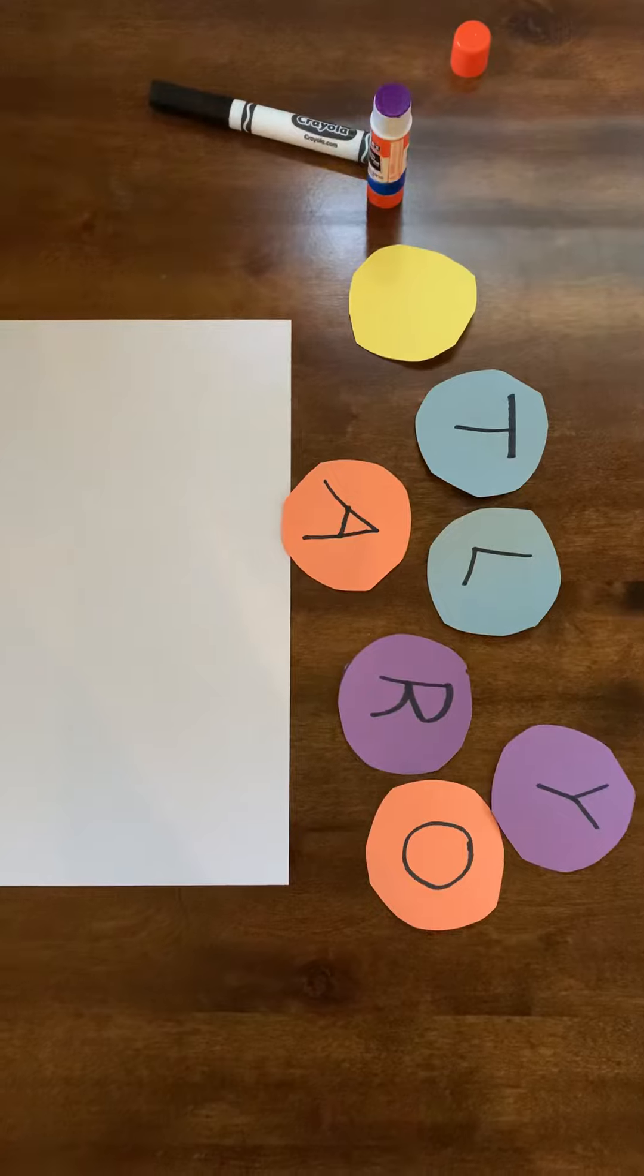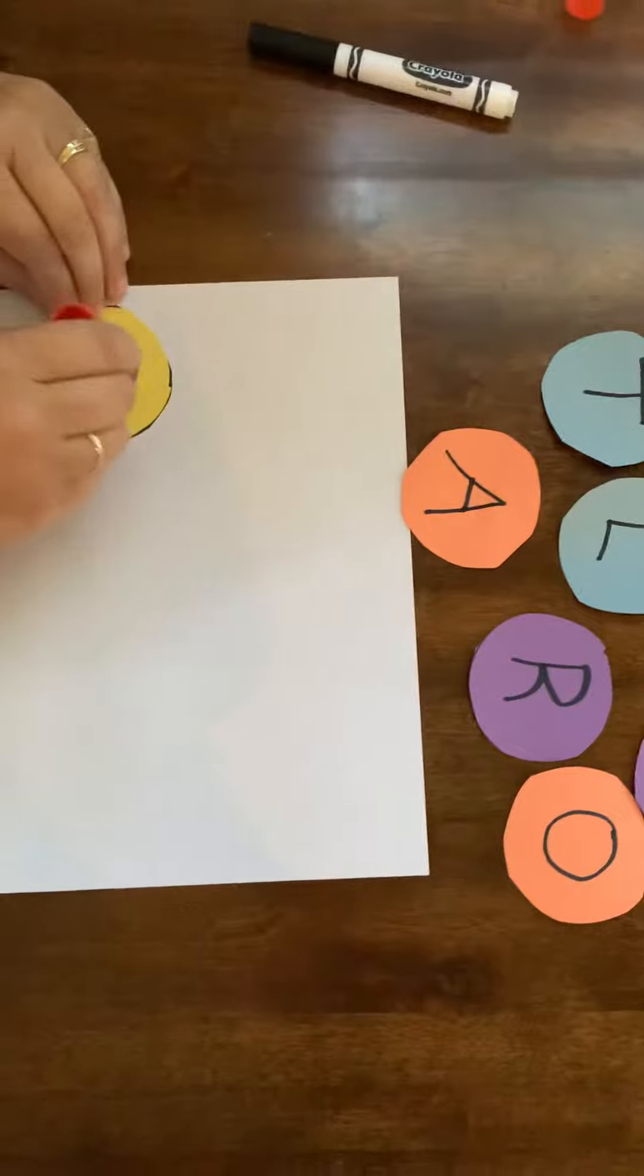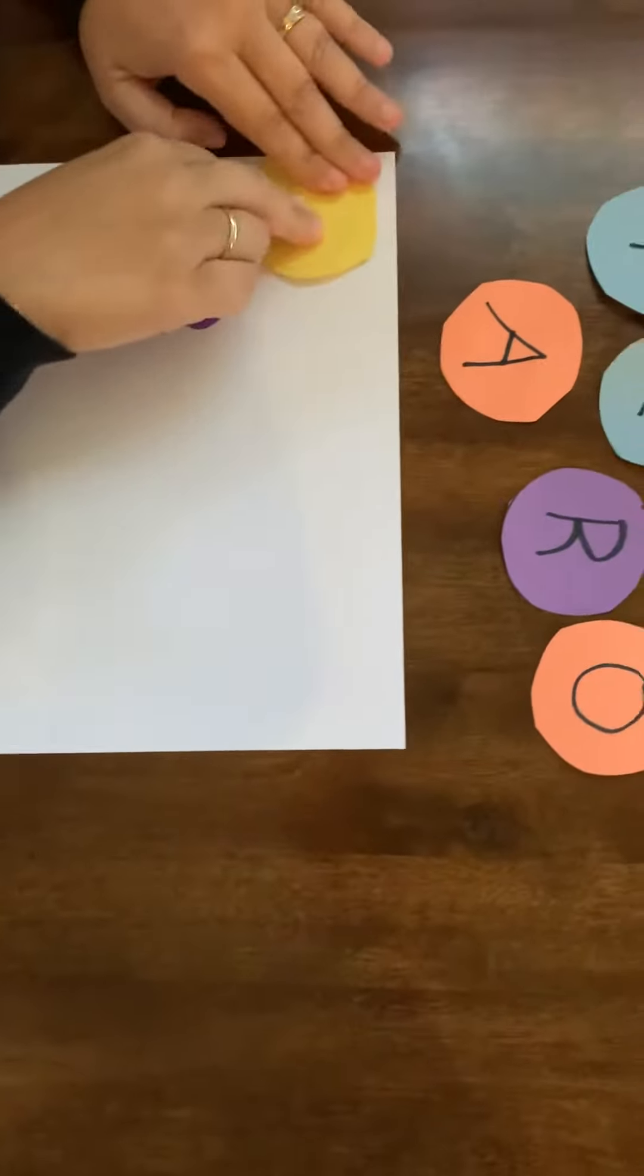All right, ask your child what color they would like the caterpillar head to be. We're going to turn it over. We're going to do circle, circle, circle, holding it like we do a pen, and put the head in the upper corner of the paper.